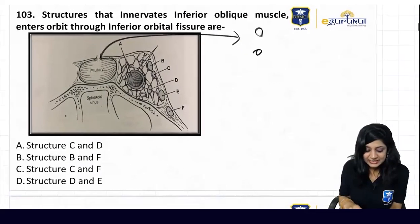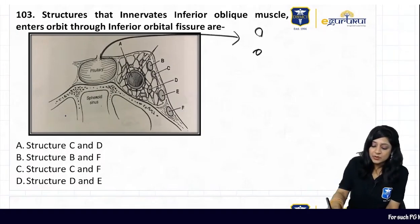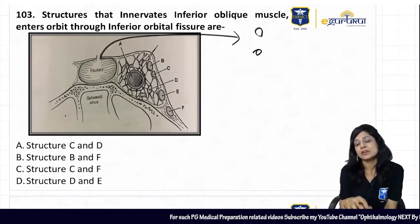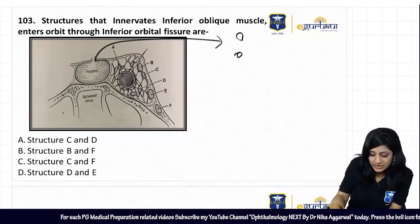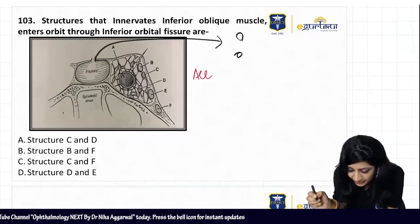Okay, so a last easy one. The structures that are innervating the inferior oblique muscle - one is this - and the structure that is passing through the inferior orbital fissure. So we know that all are supplied when we will see.